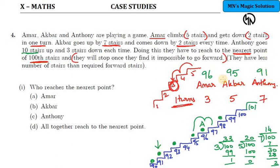For all three of them, the maximum position we have seen. The question is who reaches the nearest point? Nearest to hundred is ninety-six. So who reaches the nearest point? It is Amar. So the answer is Amar for this question.